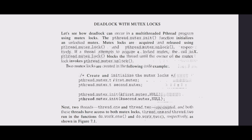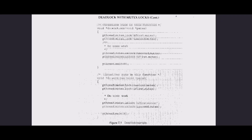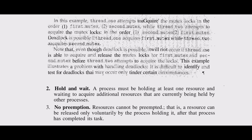Two threads — thread1 and thread2 — are created, and both have access to mutex locks. Thread1 and thread2 run in the functions doWork1 and doWork2 respectively, as shown in figure 7.1. Thread1 attempts to acquire the mutex locks in the order: first mutex, then second mutex, while thread2 attempts to acquire them in the opposite order. Note that even though deadlock is possible, it will only occur if thread1 acquires and holds first mutex and second mutex before thread2 attempts to acquire them.